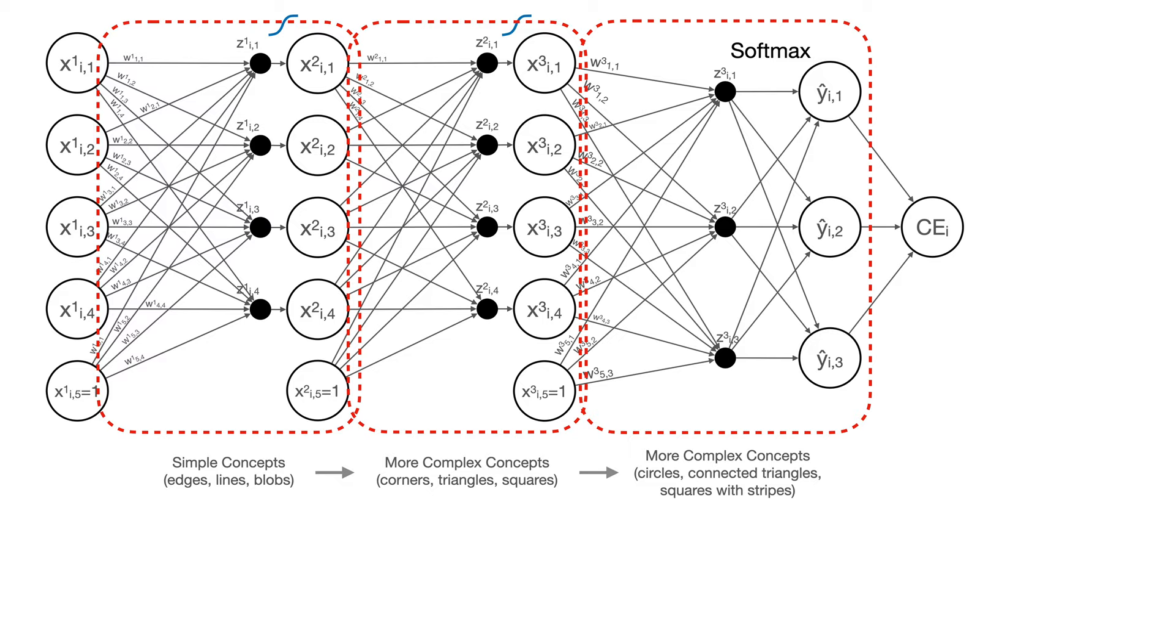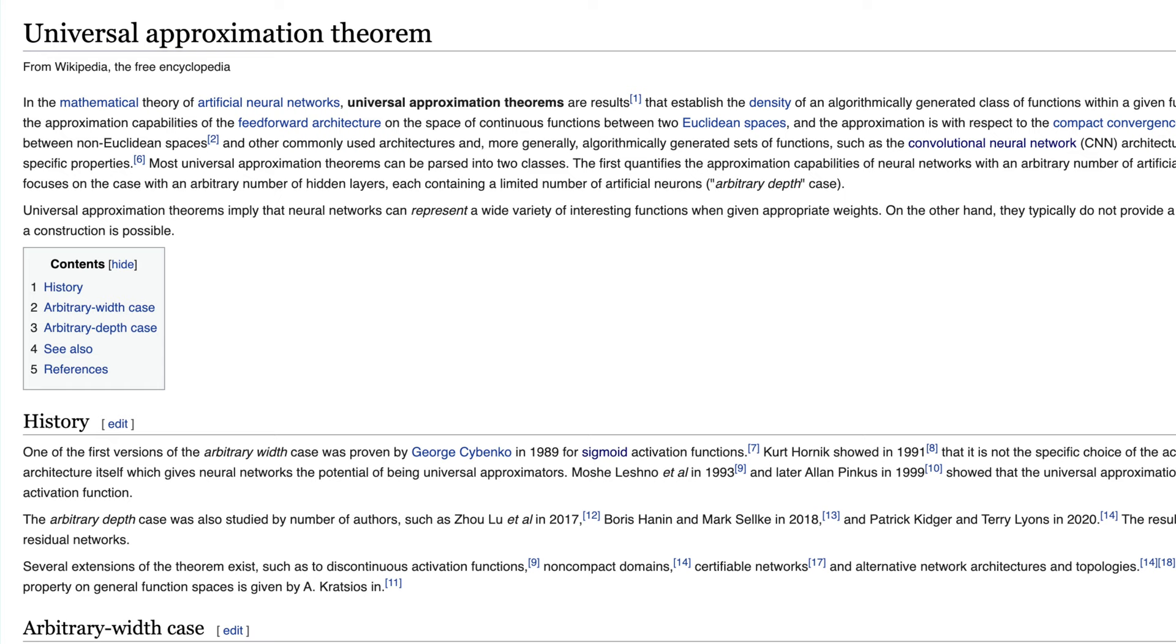Now, what's really interesting about this is it turns out that any deep neural network you can build, you can actually build an equivalent neural network with just one hidden layer, although it may require more nodes. In fact, it turns out that you can use a single hidden layer neural network to approximate any continuous function. This is known as the universal approximation theorem.